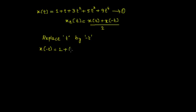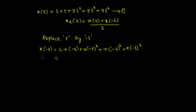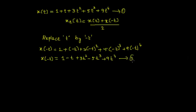By replacing t with minus t, I get x of minus t equals: 1 remains as it is, plus minus t, plus 3 times minus t to the power 2, plus 5 times minus t to the power 3, plus 9 times minus t to the power 4. Simplifying this, x of minus t equals 1 minus t plus 3t squared minus 5t to the power 3 plus 9t to the power 4. I call this equation 2.